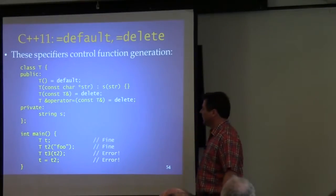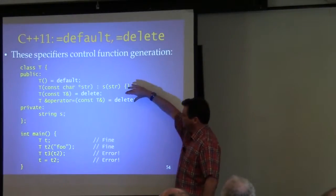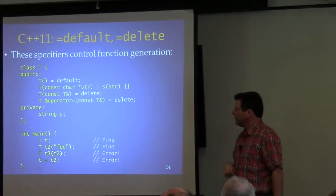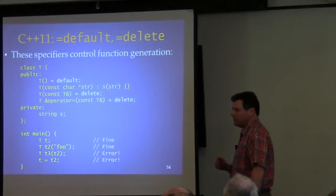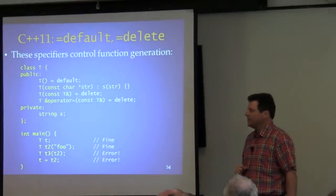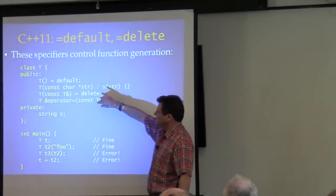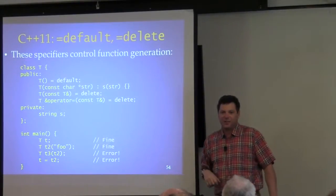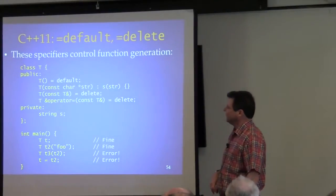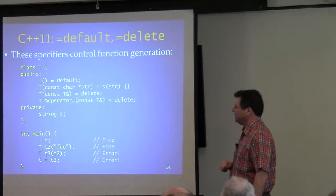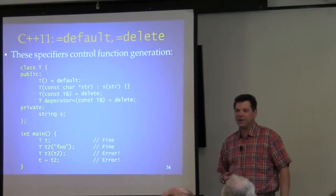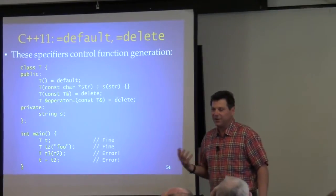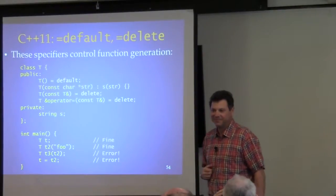What does it mean? This means that the class does not contain those member functions, and the compiler won't generate one for you. Note that the names are still public — there's a difference between whether something is available versus visible, accessible versus actually implemented. So it's not a scope error to try to make a copy, but you'll get a very clear diagnostic saying that it's been deleted.